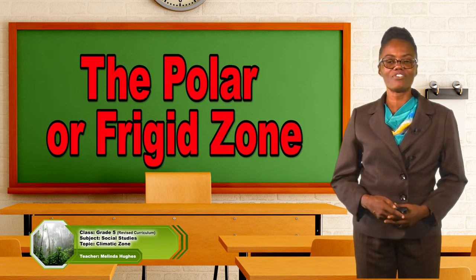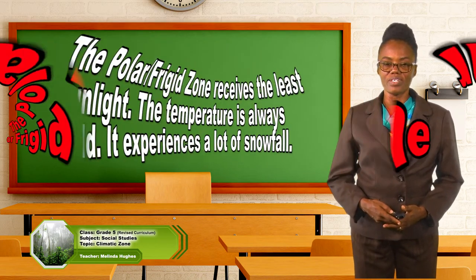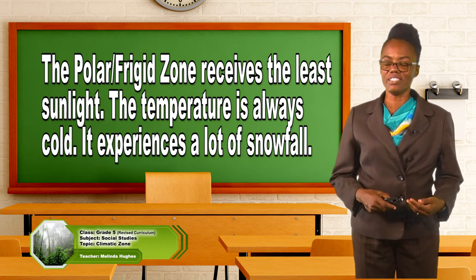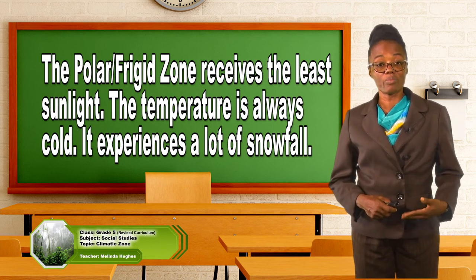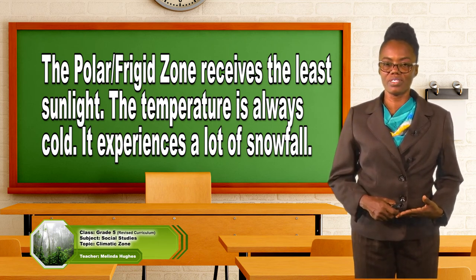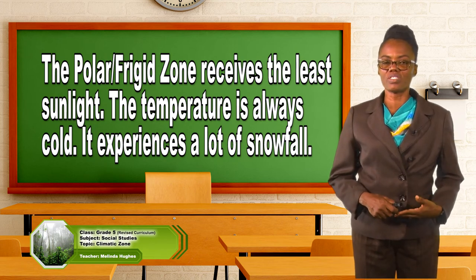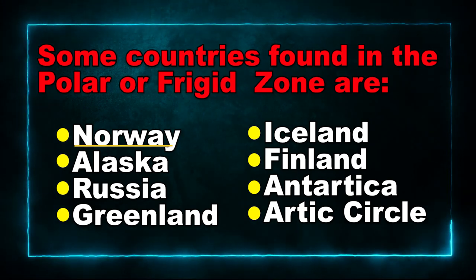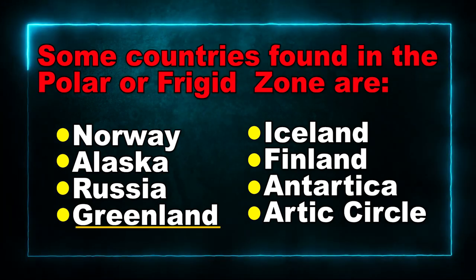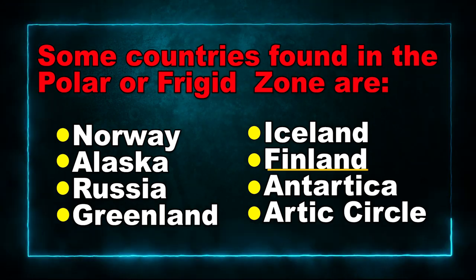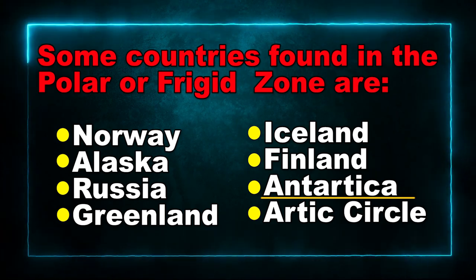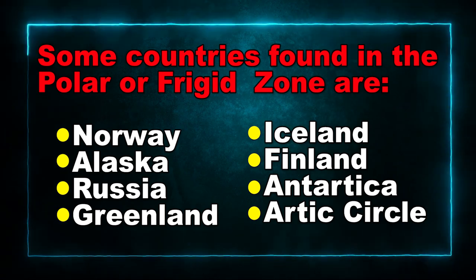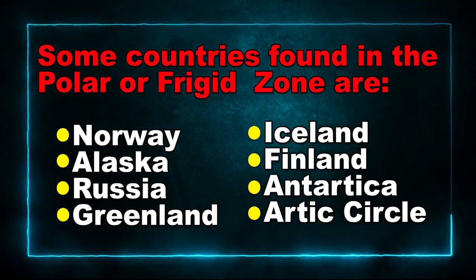Next, we will look at the frigid or polar zone. The polar zone receives the least sunlight and the temperature is always cold. The polar zone experiences a lot of snowfall. Countries like Norway, Alaska, Russia, Greenland, Iceland, and Finland are in this zone. We also have Antarctica and the Arctic Circle. Those countries and that particular area are referred to as the frigid or polar zone.